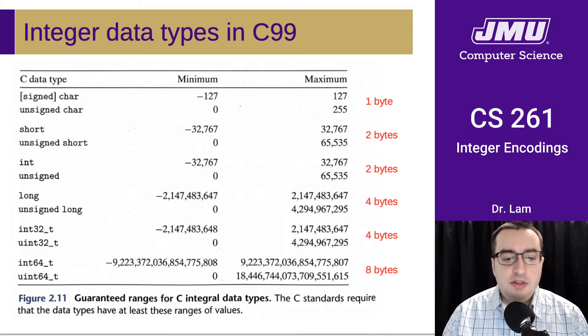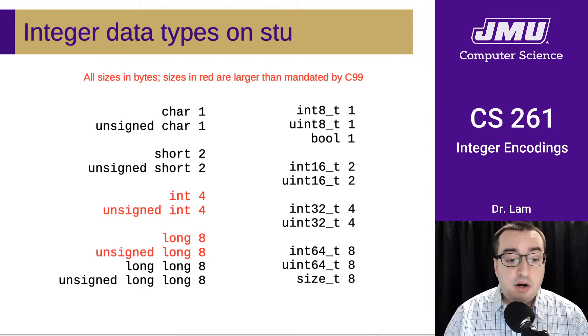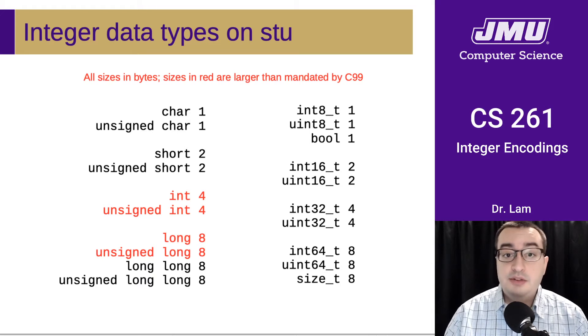So the sizes are the minimum sizes, and in fact if you were to do some experiments on stew, you'd find that a couple of the integer sizes that are available to you are actually larger than the sizes mandated by the C99 standard. So I ran these experiments just to show you, and the two that are larger are in fact int and long, so those are guaranteed to be at least 2 and 4 bytes respectively by the standard, but they are 4 and 8 bytes respectively on stew.